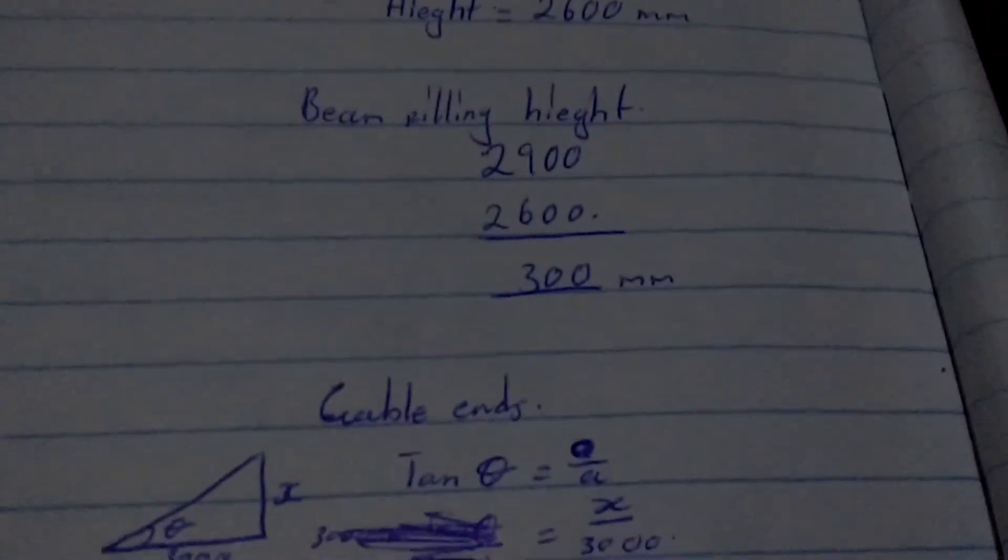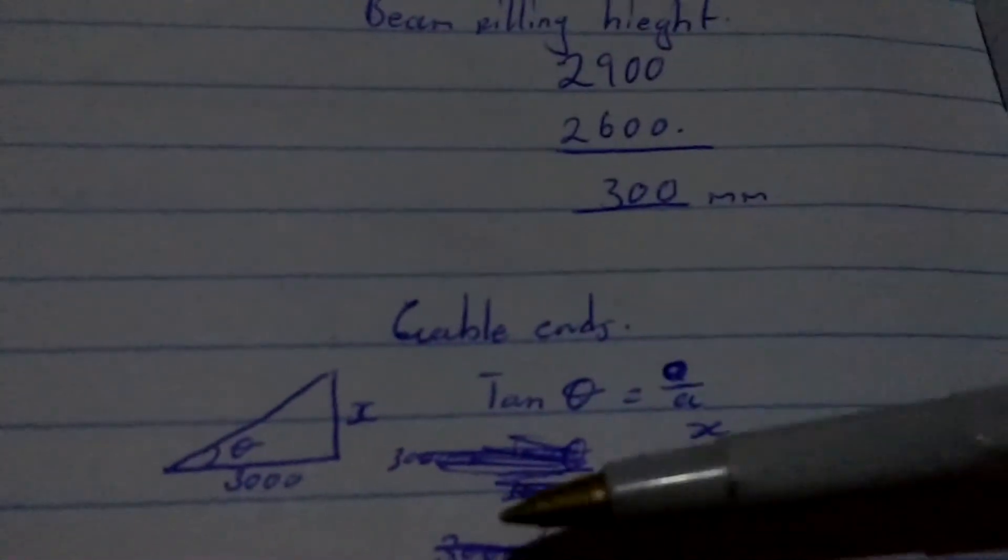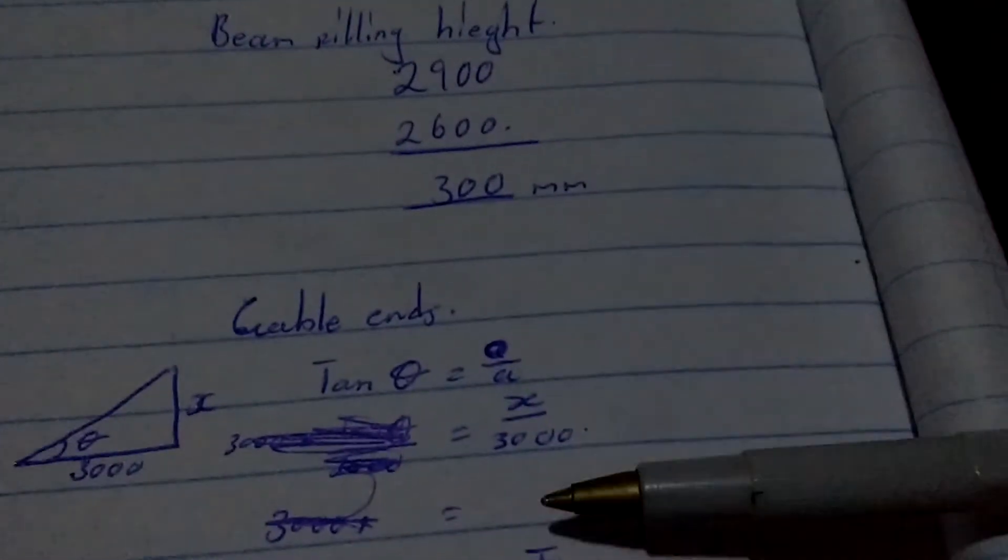So and then we use the, we use tan theta is equal to opposite over adjacent, which is also the same as X over 30,000.